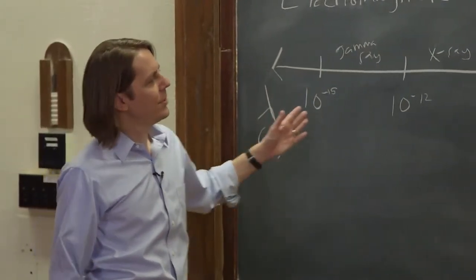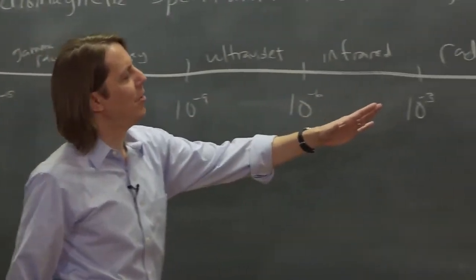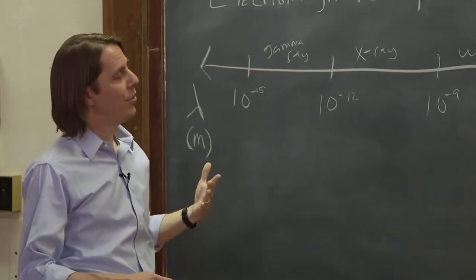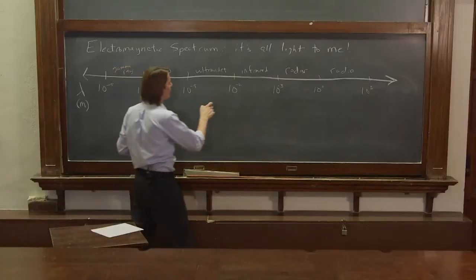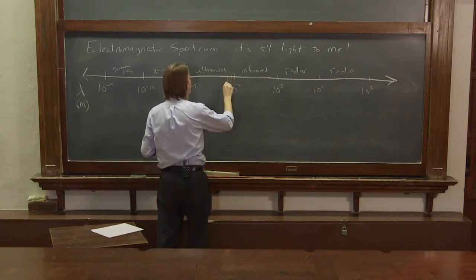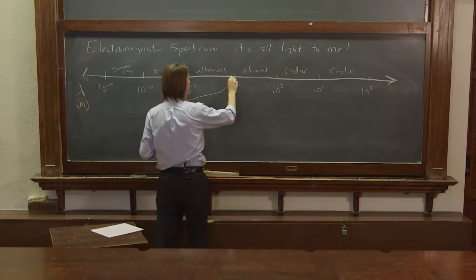So all these different names are really based on how light interacts with matter. It's sort of size scale, but it's also the way it interacts with matter. And one very special place that interacts with matter is right in here between 400 and 700 nanometers. And that is, of course, visible light.